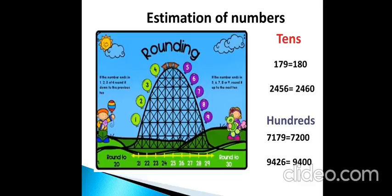See the second example, 9,426. While estimating to hundreds, we choose the tens digit, which is 2. Since 2 is less than 5, we round down to the nearest lower value, so 9,426 is estimated to 9,400. The rule of estimation is: if a number is less than 5, estimate to the previous nearest number; if a number is 5 or greater, round up to the next upcoming nearest number.